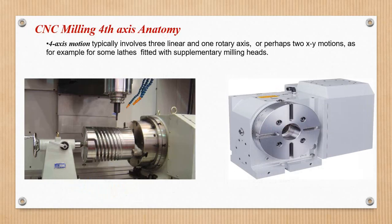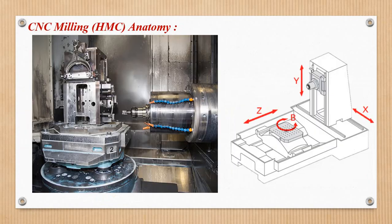So in VMC, the 4th axis is the A axis — the rotary axis around X. In HMC, the rotary axis around Y is called B, and that is the 4th axis used in HMC. So the rotary axis naming follows: A for X, B for Y, and C for Z.